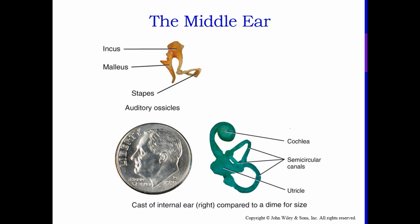Here's a shot to give you an idea of how small those three bones are — they would all fit on a dime. The green-colored bones shown are found in your inner ear. You have the cochlea, which is your organ of hearing, and the semicircular canals, which give us our balance and equilibrium.